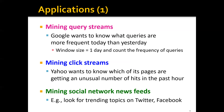One application is mining search queries — for example, Google may want to know which queries are more frequent today than yesterday to identify trending topics, setting the window to one day and counting query frequency. Another application is mining clickstreams, such as Yahoo identifying pages with unusual hit counts in the past hour. A further application is mining social network feeds to find trending topics on Twitter or Facebook.